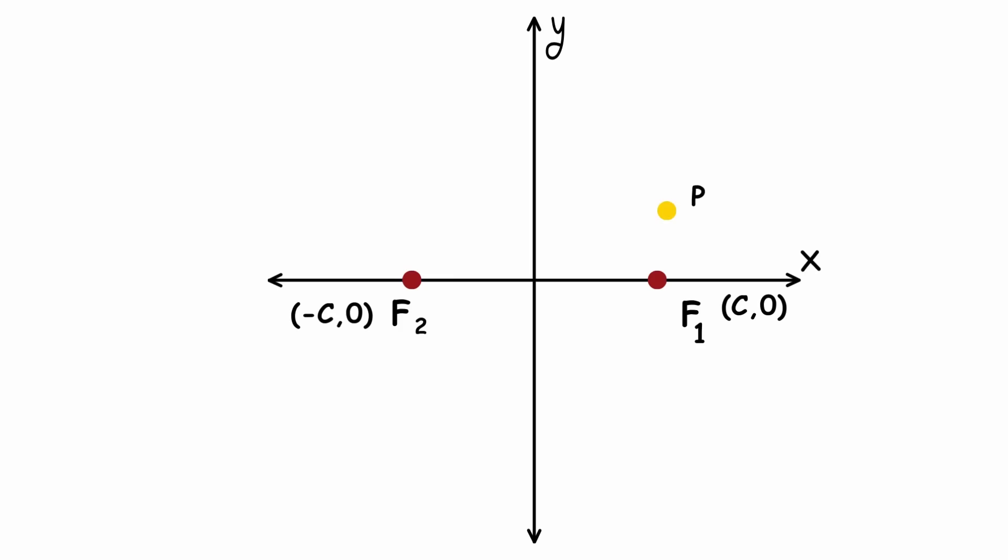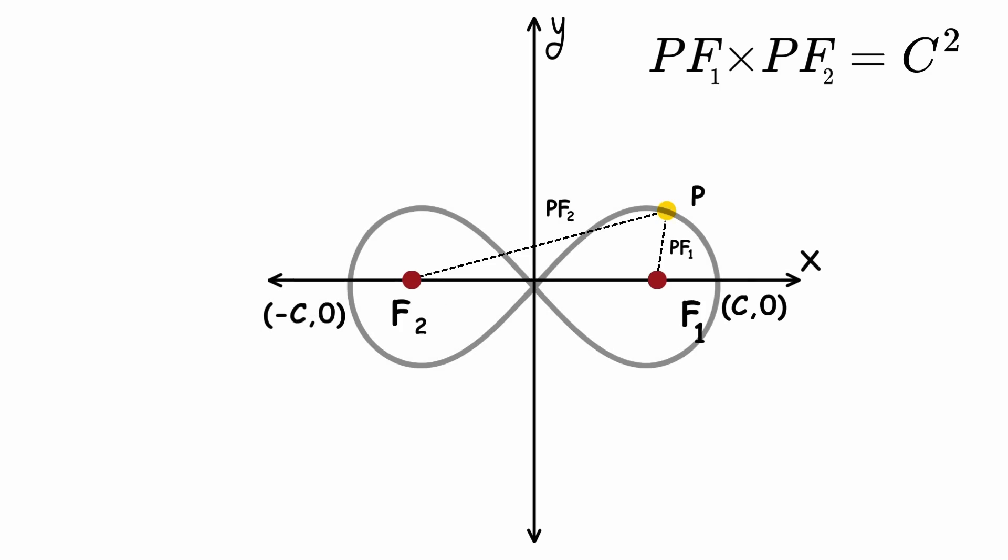Now, pick some point p and determine how far it is from each focus. These distances will be called pf1 and pf2 respectively. If pf1 times pf2 is equal to c squared, then we will fill it in. Doing this for all possible points in the plane, we will get a figure 8 shape.